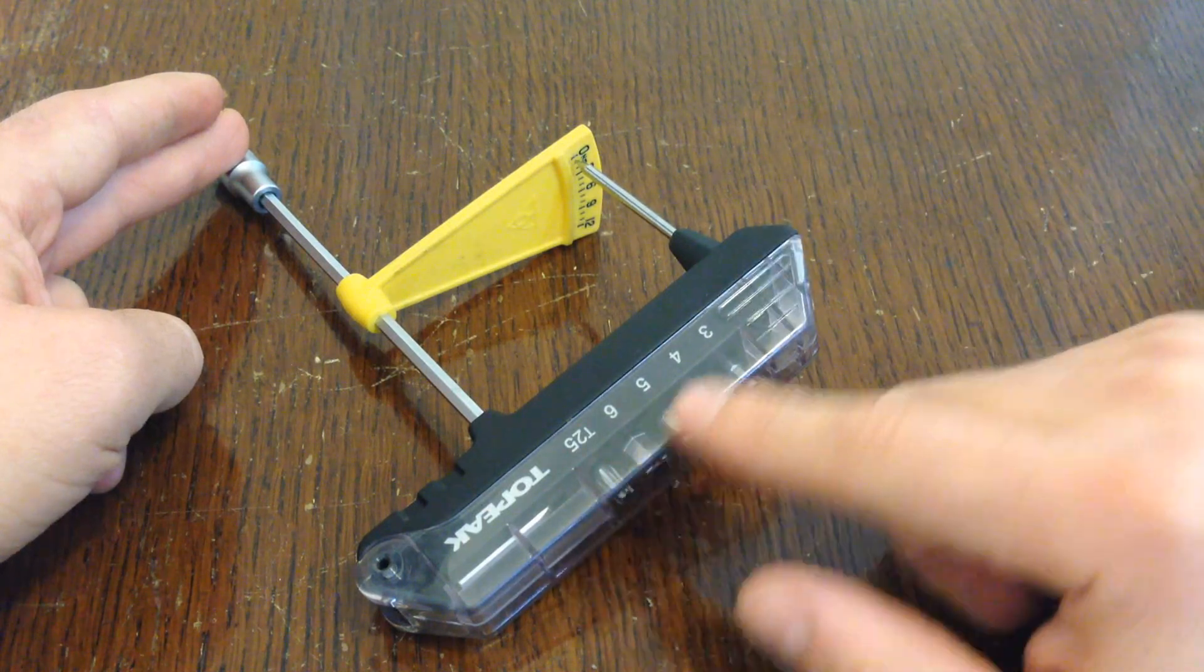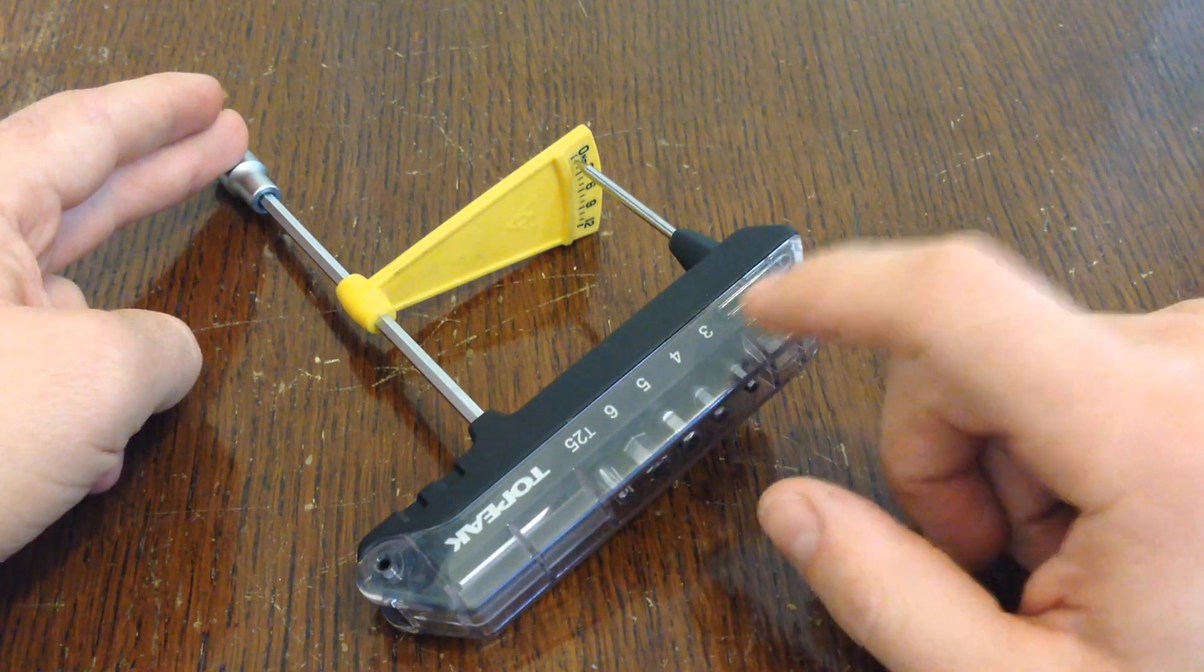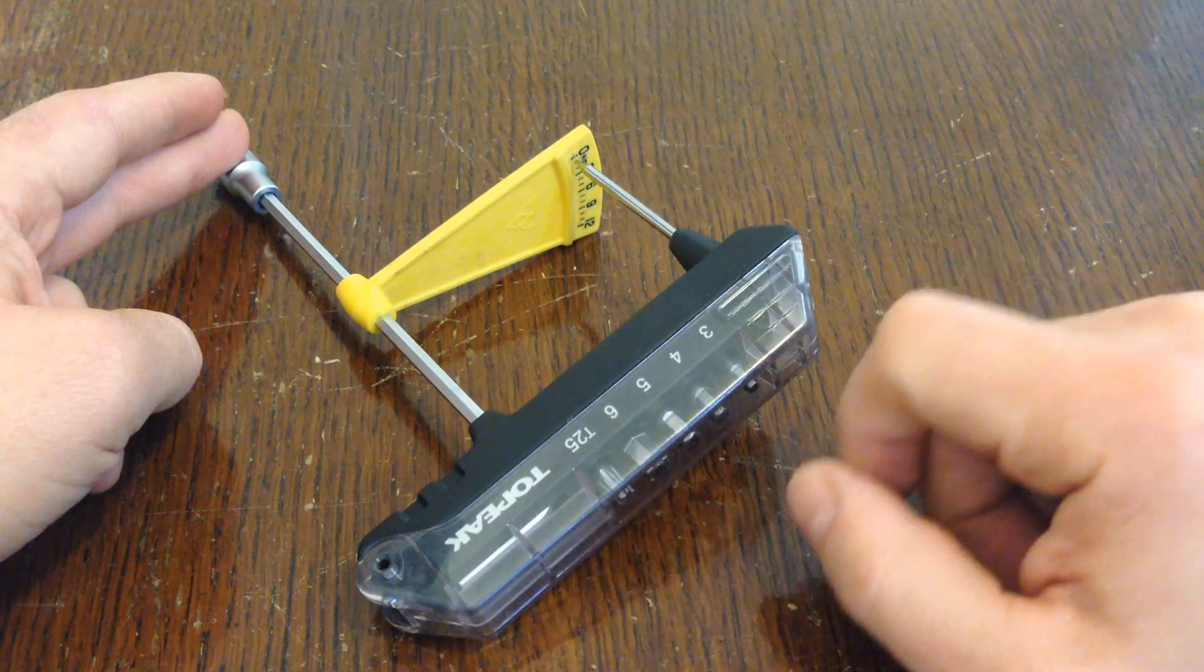It goes up to 12 Nm and comes with a selection of bits. We've got a 3, 4, 5, 6 and a T25.